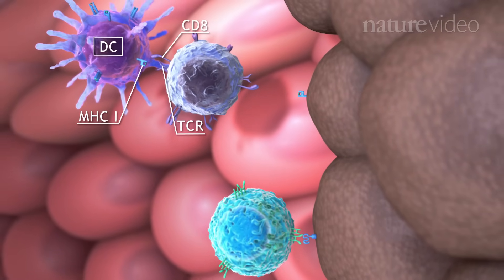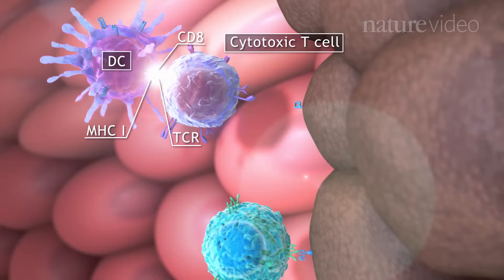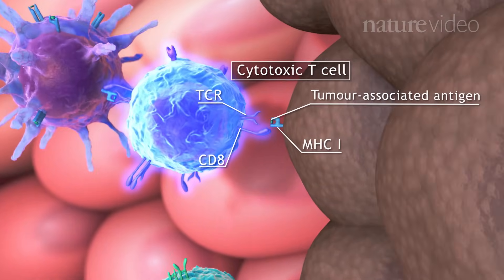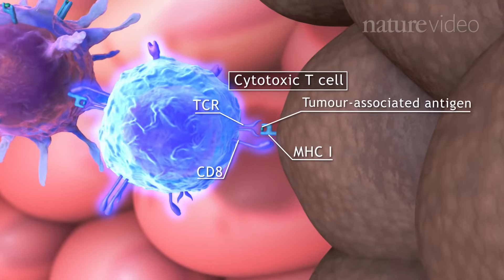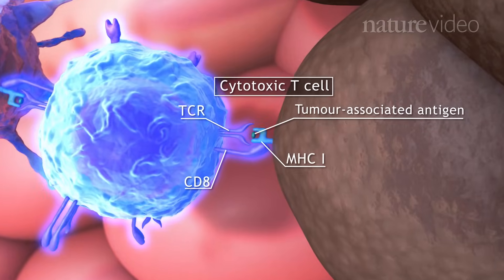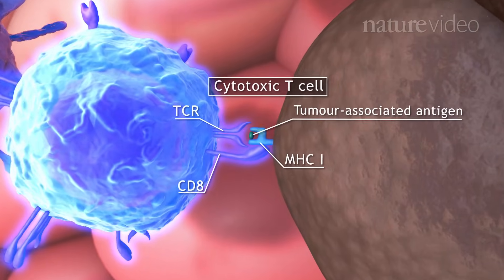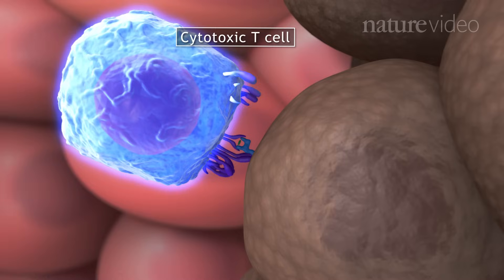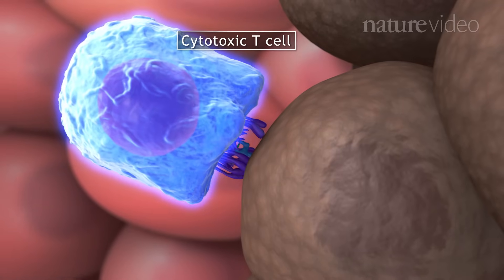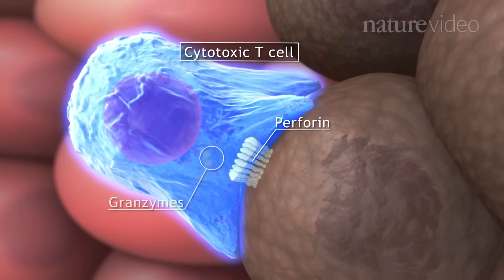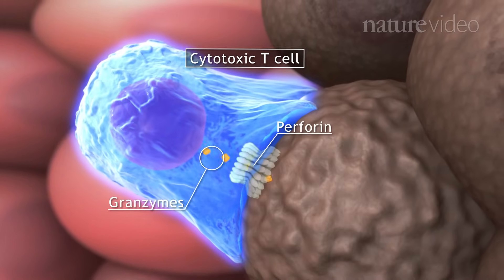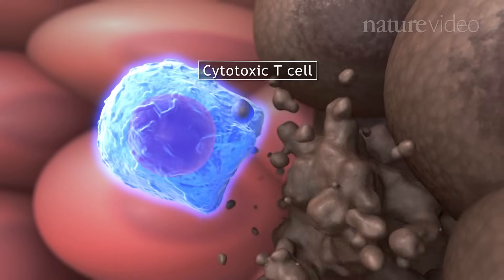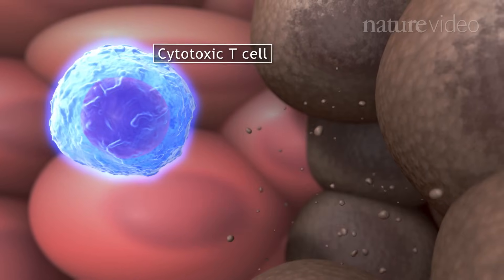Dendritic cells, or DCs, activate cytotoxic T cells, which can then sense tumour-associated antigens using their T cell receptor and other co-receptors. Once activated, NK cells and cytotoxic T cells release perforin and granzymes. These molecules punch holes in the surface of the tumour cells, causing them to die by apoptosis.